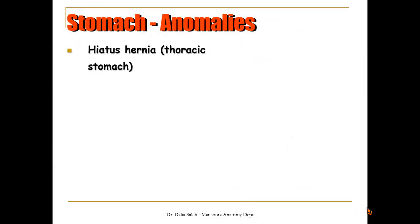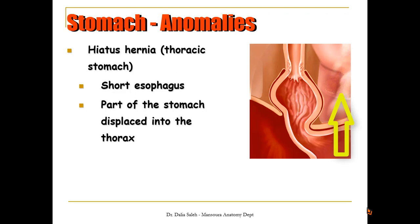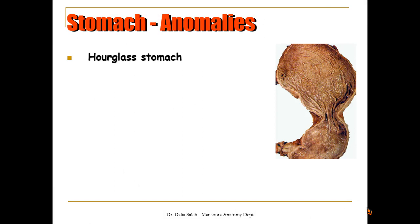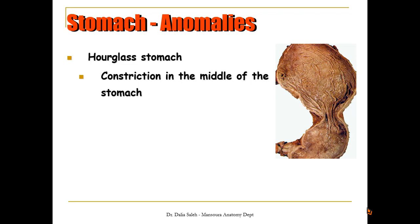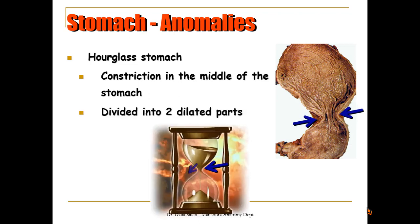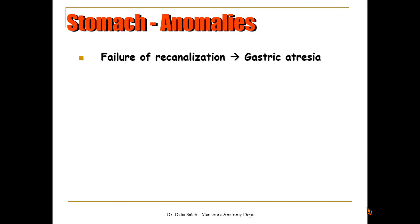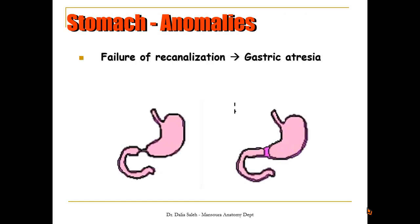Another anomaly is hiatus hernia, which results from a short esophagus, causing part of the stomach to slide into the thoracic cage. We may also have hourglass stomach, where a constriction in the middle of the stomach divides it into an upper and lower part. Additionally, there are anomalies resulting from failure of re-canalization, such as gastric atresia, which presents in different degrees.